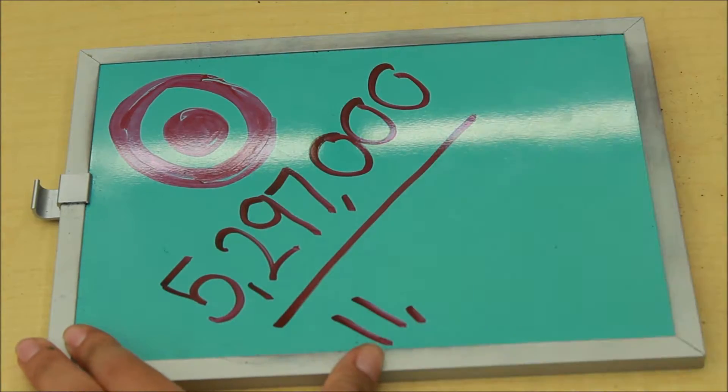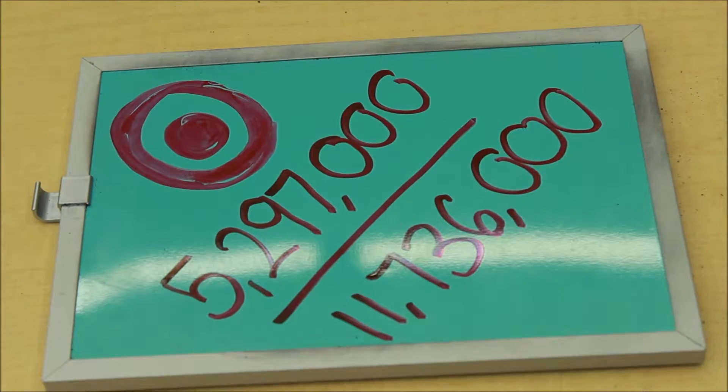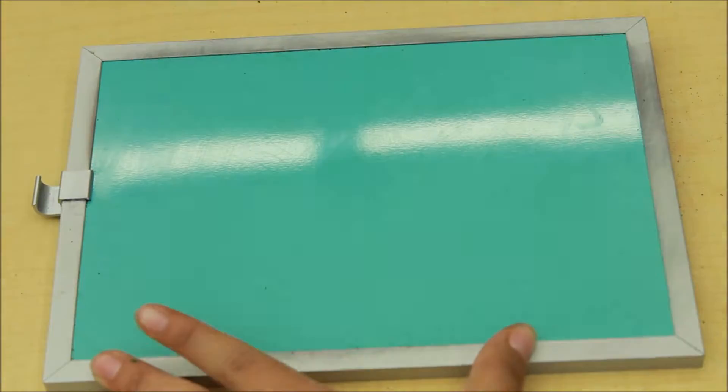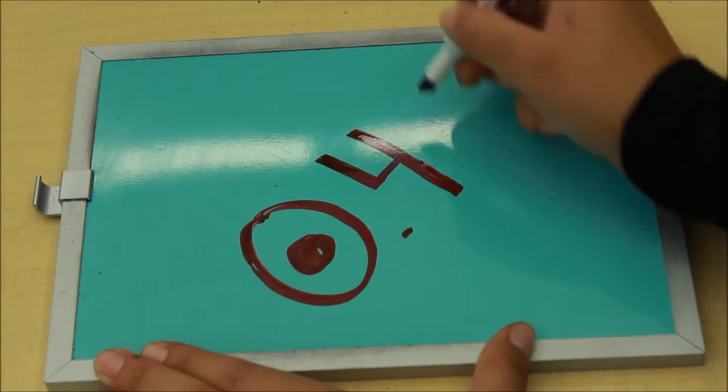In Target's case they hold $5,297,000 in current assets including inventory and $11,736,000 in current liabilities which results in a higher ratio of 0.45.